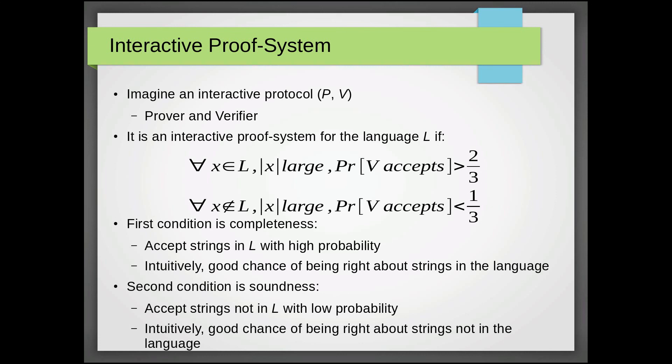for every string X that's actually in the language, such that X is sufficiently large, the probability that V actually accepts this string into the language is greater than two-thirds. And for every string X not in the language, such that X is sufficiently large, the probability that V accepts this string in the language is less than one-third.